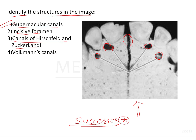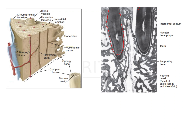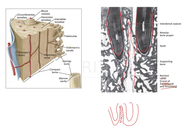The interdental bone consists of the cribriform plate, present between the roots of adjacent teeth. This interdental bone is interspersed by nerves and blood vessels from the periodontal ligament — that is why it is called the cribriform plate. The perforating canals within the interdental bone that transmit nerves and blood vessels are known as the nutrient canals of Zucker Candle and Hirschfield. These radiate through the supporting alveolar bone.